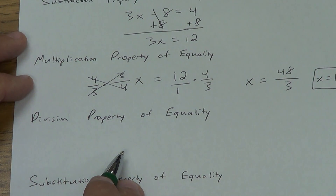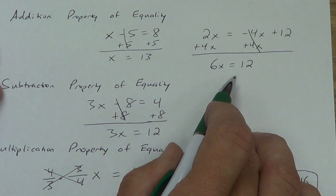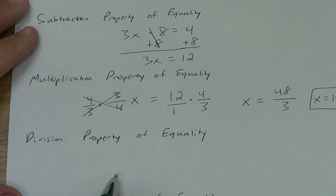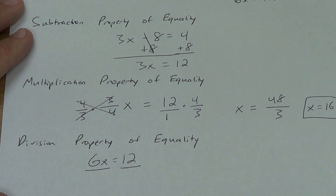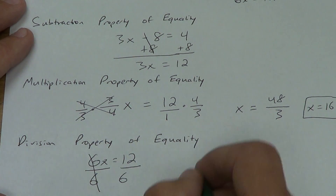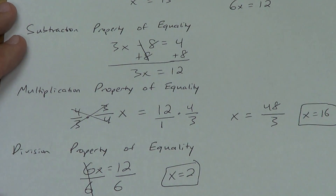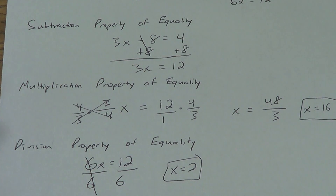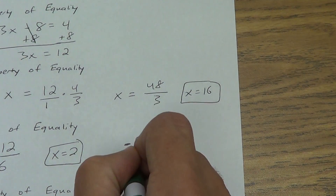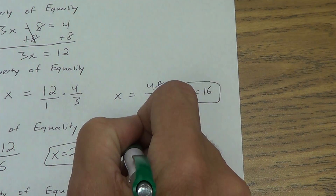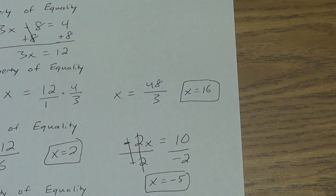Division property of equality — you can divide both sides of the equal sign by the same thing. That's how we would finish a problem like 6x equals something. We divide both sides by 6, these cancel, x equals 2. Same thing with 3x equals 12: divide both sides by 3, x equals 4. We can do it with a negative too. Maybe I get negative 2x equals 10 — divide both sides by negative 2, the 2s cancel, the negatives cancel, negative divided by a negative is a positive, x equals negative 5. That's the division property of equality.